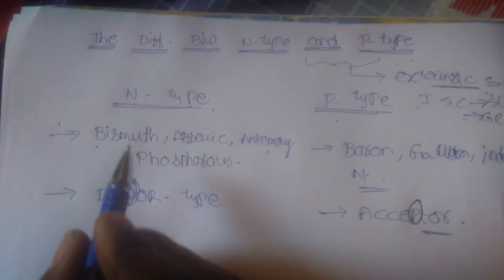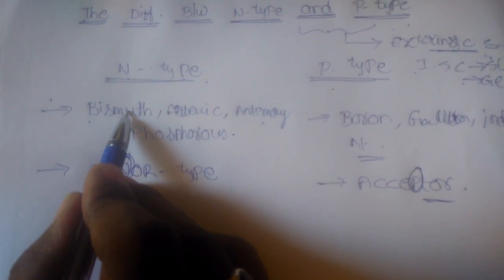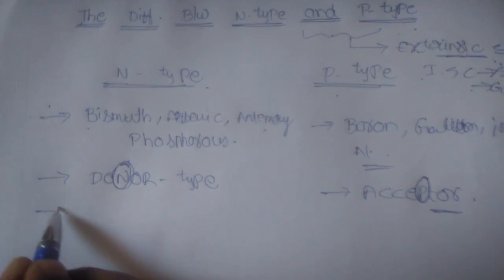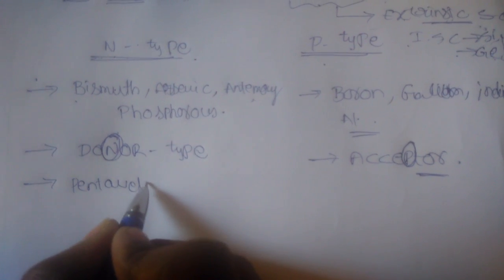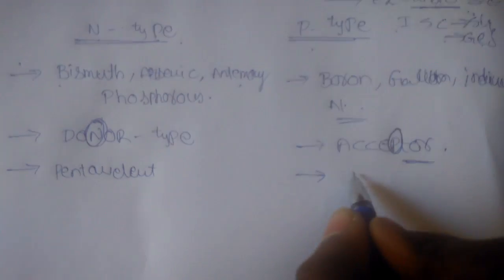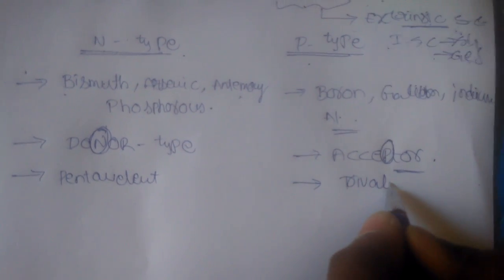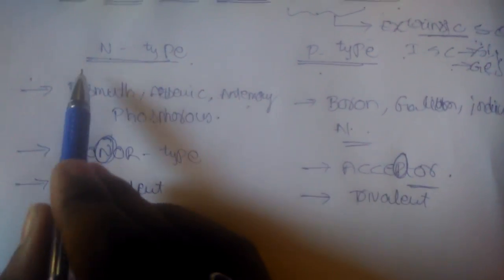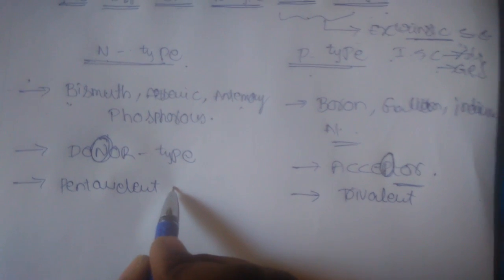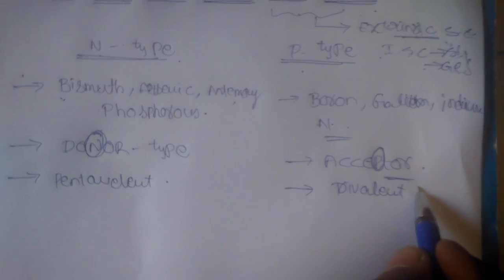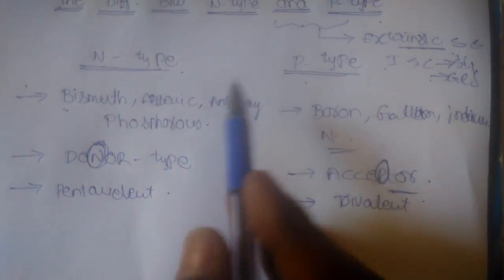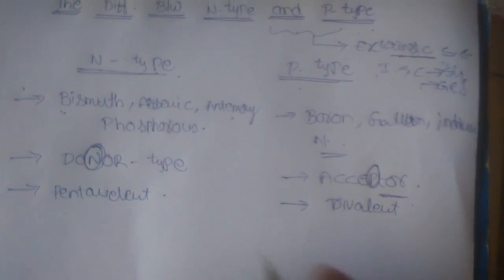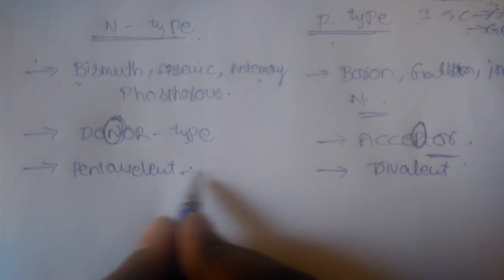N-type materials are associated with pentavalent impurities, and p-type materials are associated with trivalent impurities. In exams, they ask: 'Which of the following is a pentavalent impurity?' or 'Which of the following is a trivalent impurity?' — not directly n-type or p-type. So we should remember from this point of view.